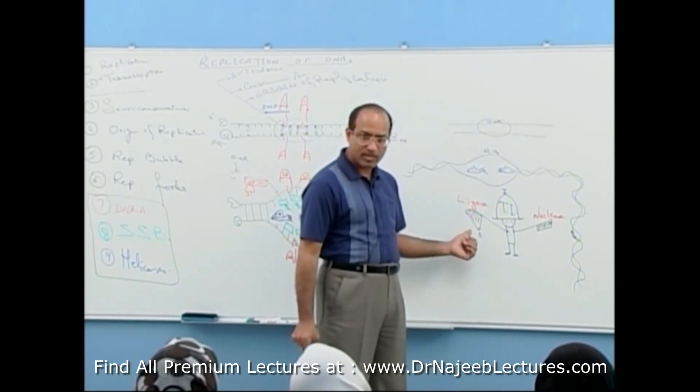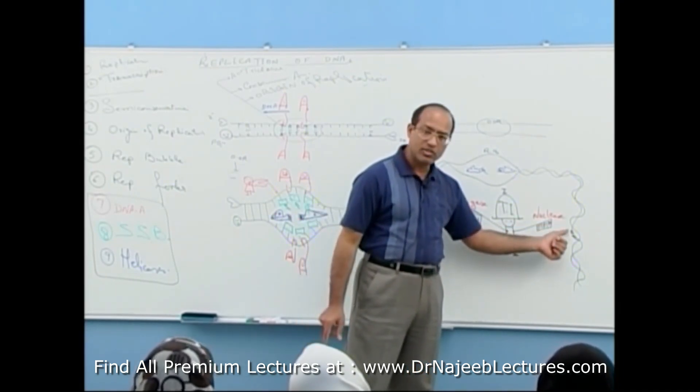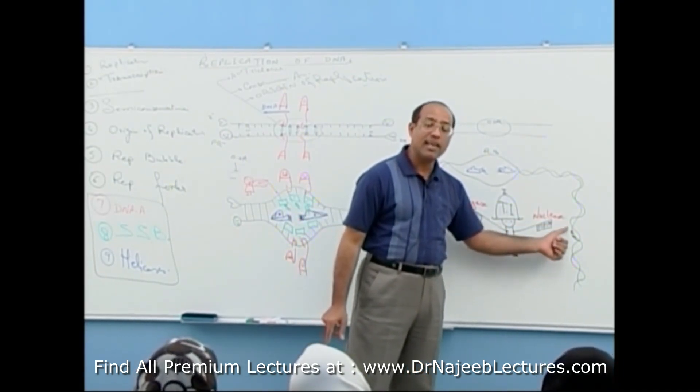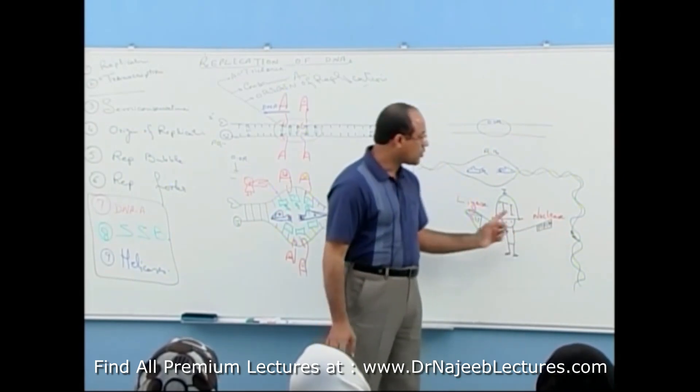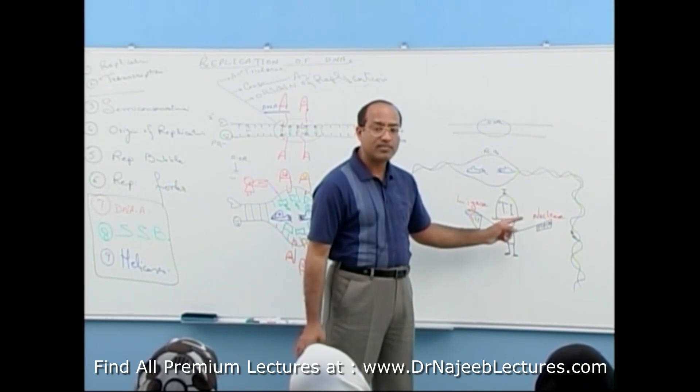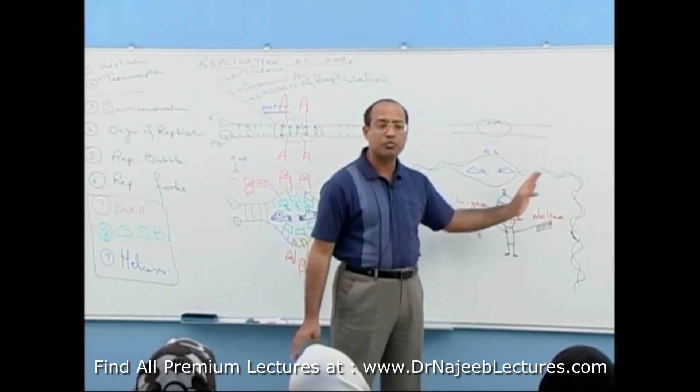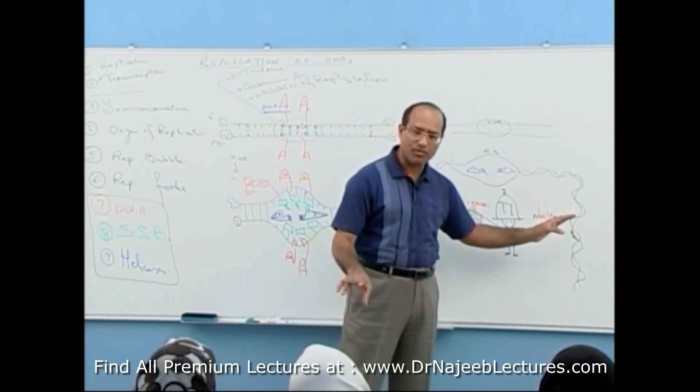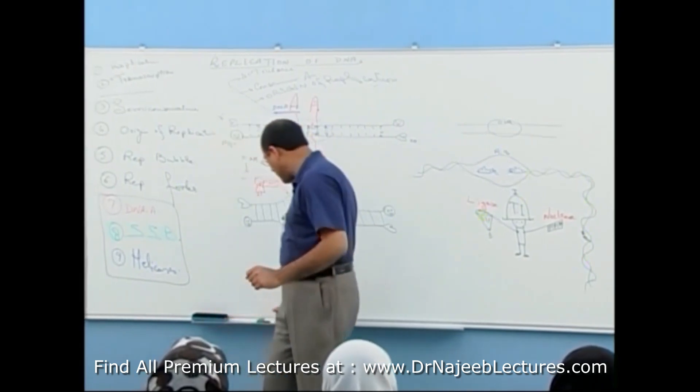...its ligase unit will seal this point or ligate this point. So this is how topoisomerases are at work ahead of the replication fork so that the problem of supercoil should be solved. This was topoisomerase 1. Actually there are topoisomerases of other types also.